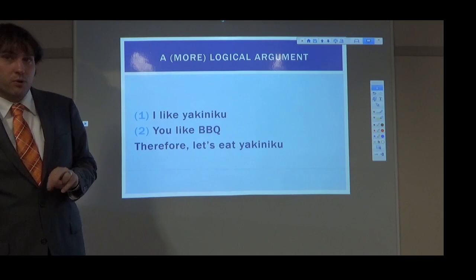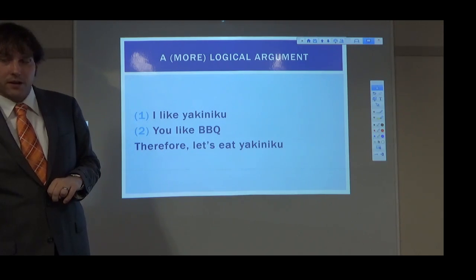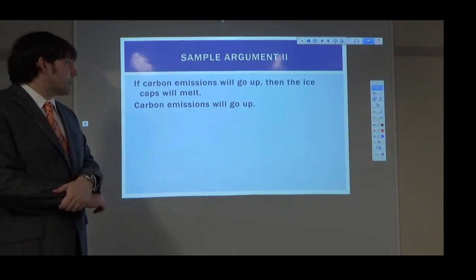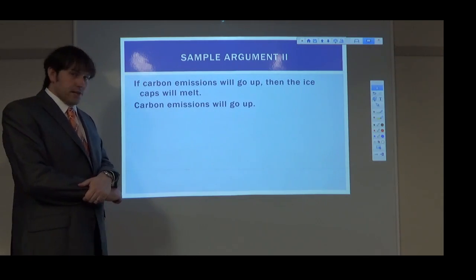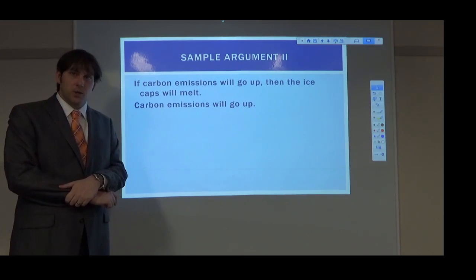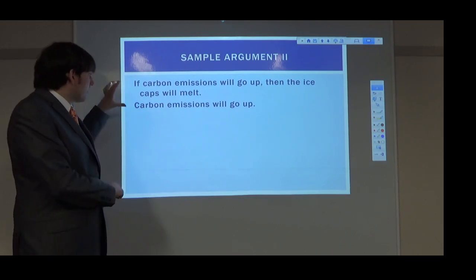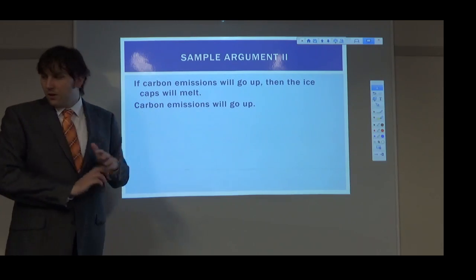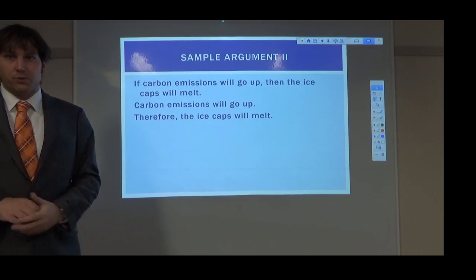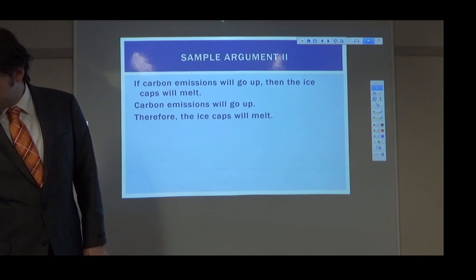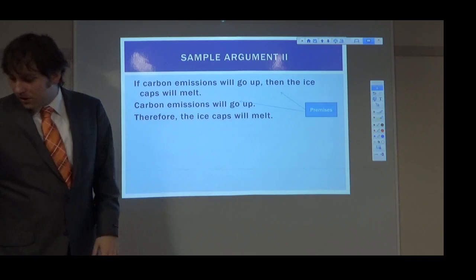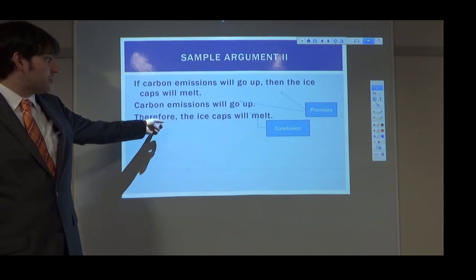I want to look at two more arguments. Sample argument two. If carbon emissions will go up, then the ice caps will melt. Carbon emissions will go up. So if those are the premises, I hope you can guess what the conclusion is. Therefore, the ice caps will melt. The first two parts are premises — these support it. The last part, the conclusion, is what we're trying to prove.